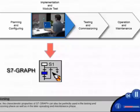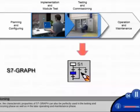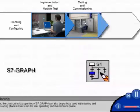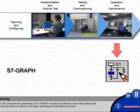However, the characteristic properties of S7 Graph can also be perfectly used in the testing and commissioning phase, as well as in the later operating and maintenance phase.